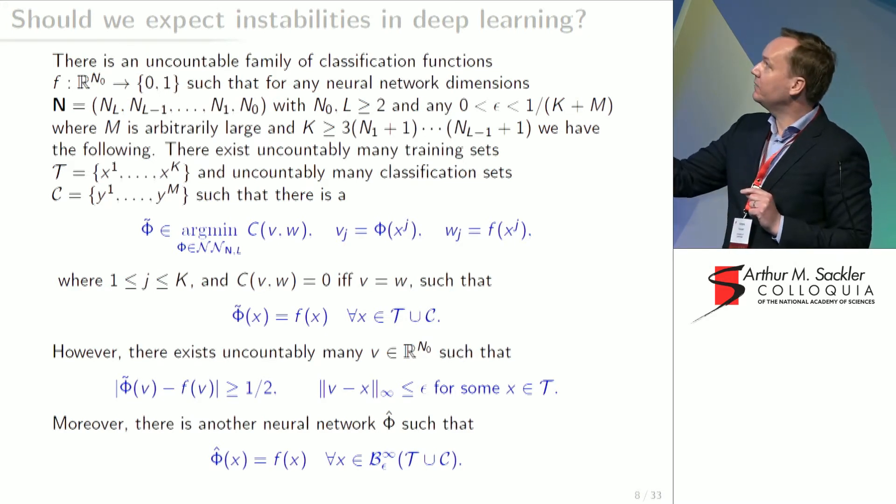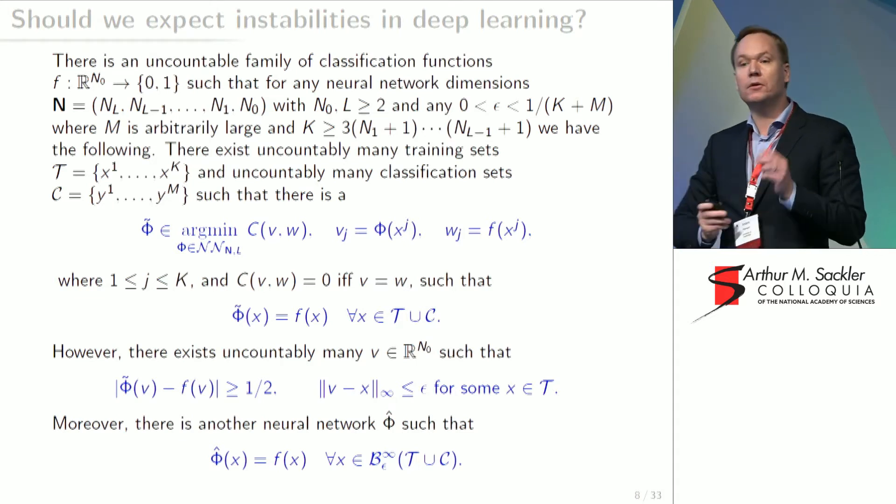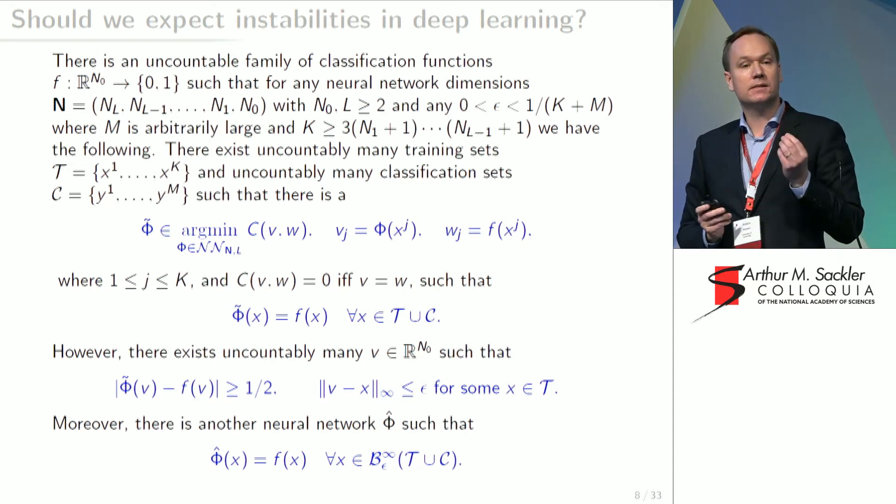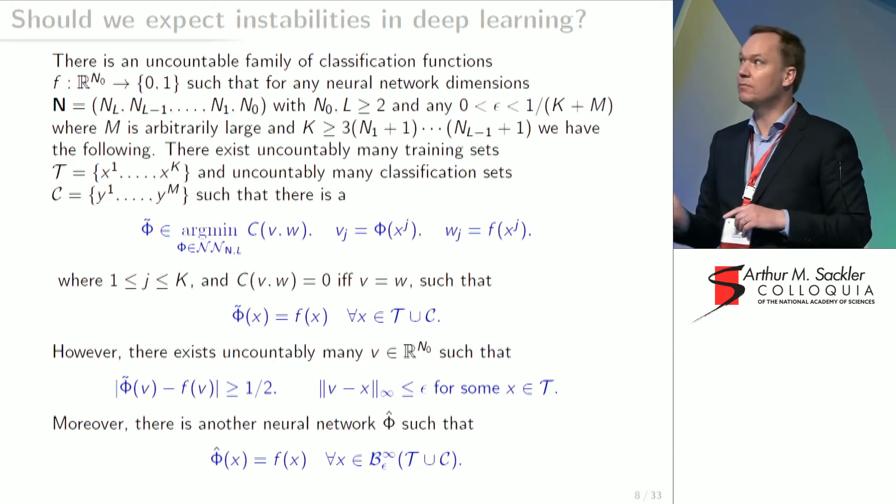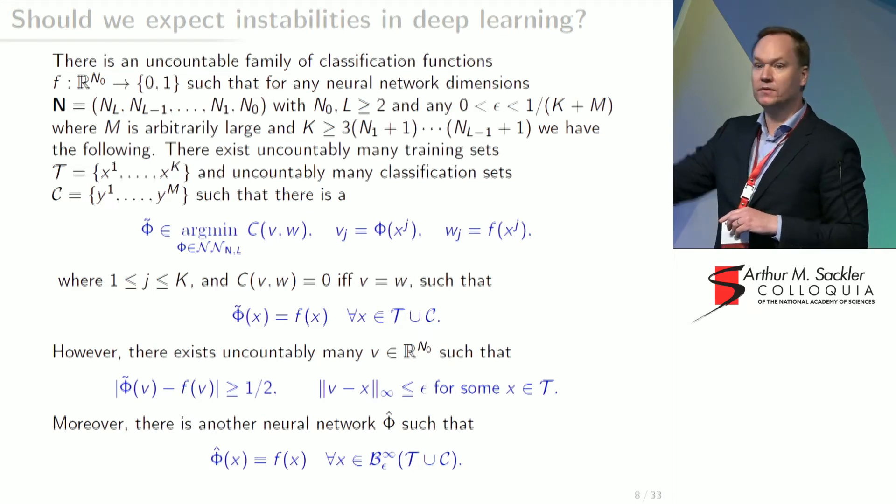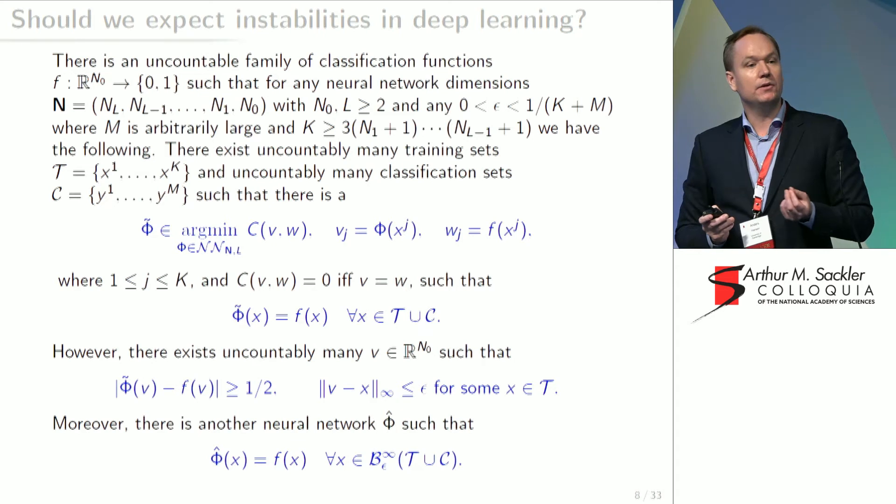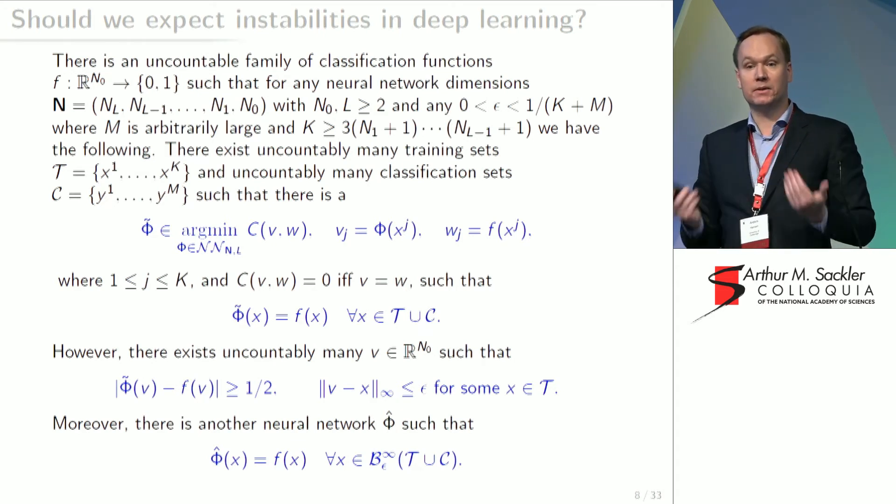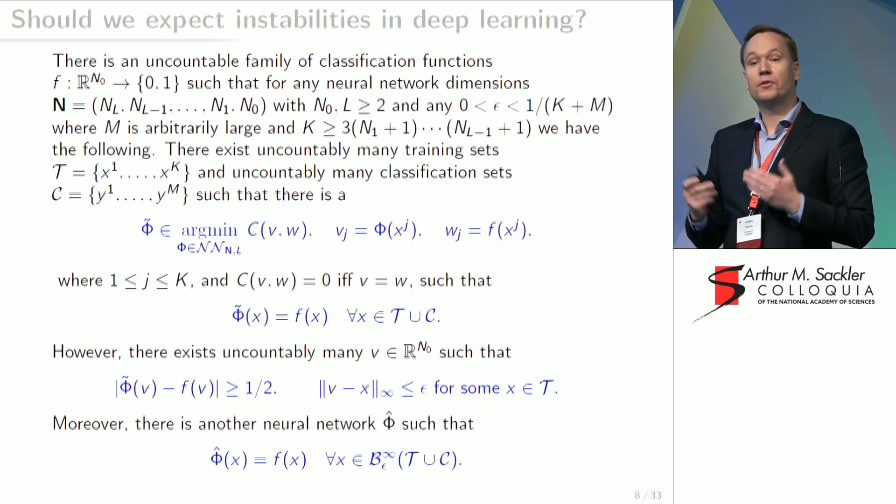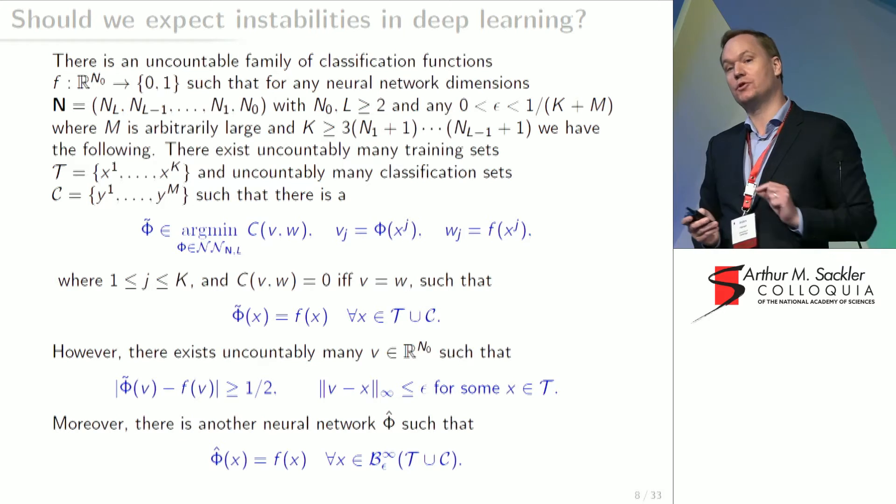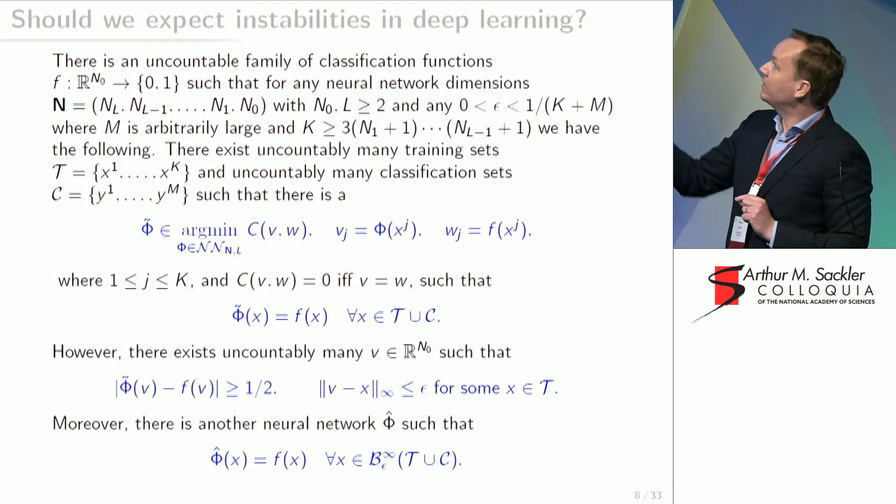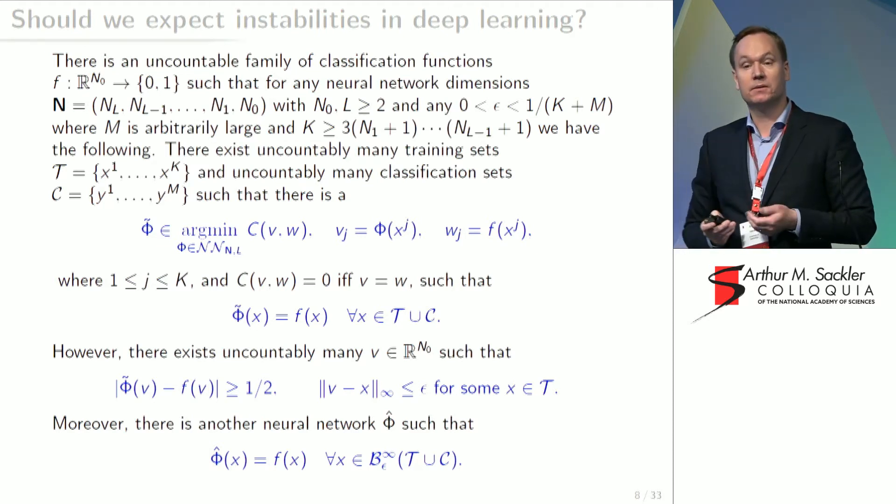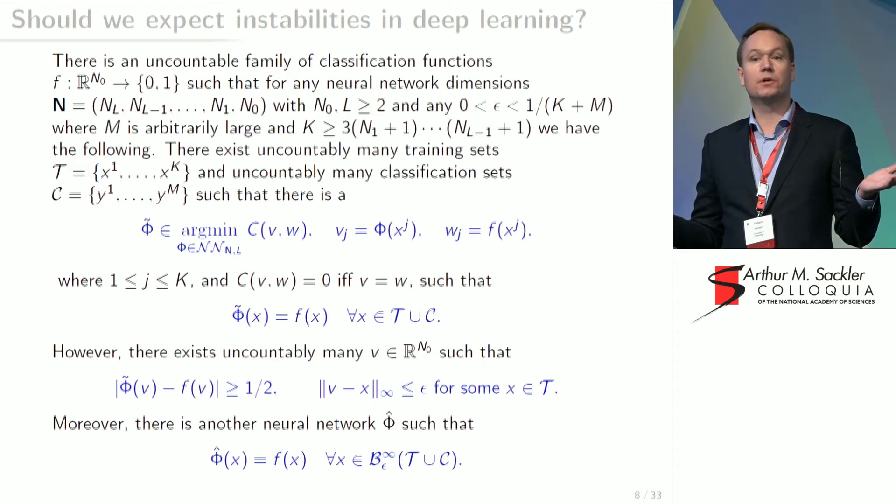But here comes the paradox. What this says is that we get the instability from the way we train. But there is another neural network out there that has the same success rate and is also stable. This guy here means the epsilon ball around the set. The problem is that we don't know how to get that guy. We're actually getting the instability from the way that we train. But there is another guy out there for which we don't know how to construct, which is both stable and accurate. So if we think about this question, should we expect instabilities? Well, there are uncountably many cases for which we're going to see this phenomenon.